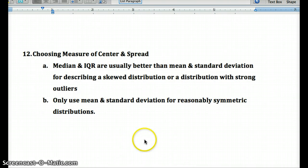You only want to use the mean and standard deviation for reasonably symmetric distributions. If you have a skewed left or skewed right distribution or a distribution with strong outliers, you want to use median and IQR because the outliers aren't accounted for in the spread.